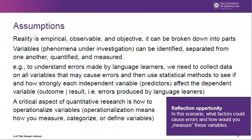Let us look at the assumptions of quantitative research. The assumptions that quantitative research makes about reality are quite different from those of qualitative research. Instead of perceiving reality as being socially constructed and subjective, reality is considered to be empirical and observable, and it is broken down into parts. These parts can be called observations, phenomena, or variables. The important part is that variables can be identified, separated from one another, and quantified and measured, either directly or indirectly.